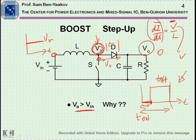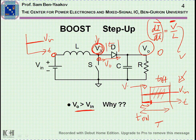When you take the average — if you take the area and divide it by the period — you'll end up with a value something like this. So this would be V in, which implies that V out must be higher than V in.